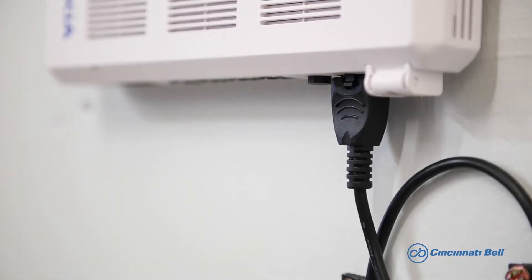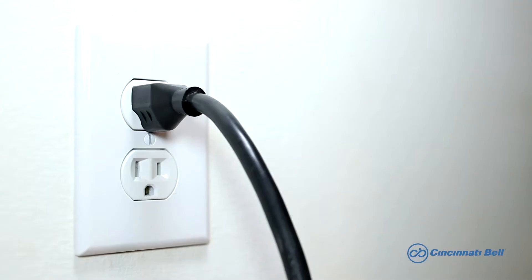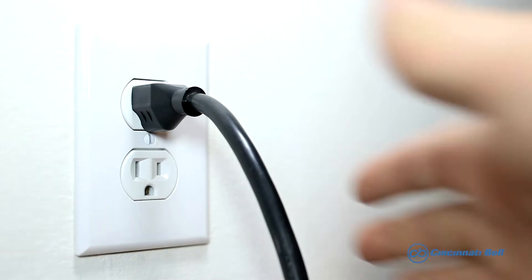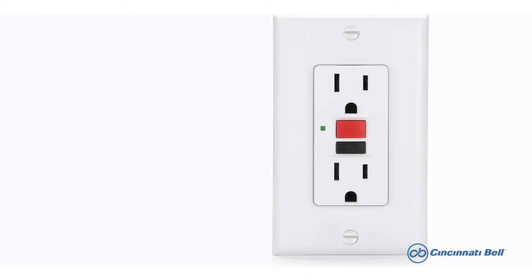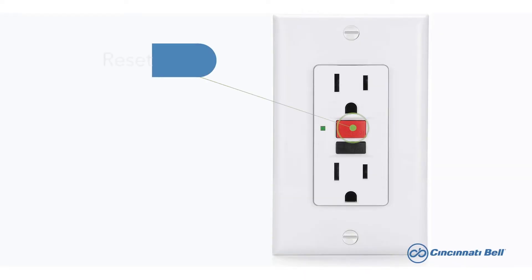Now that you've located your ONT, let's check and make sure there aren't any loose connections causing it to malfunction. Look for the main power cord that goes into the ONT and check it for a tight connection. If that appears to be secure, check your plug and make sure the end is tightly inserted into the outlet. If it's plugged into a GFI outlet, you may need to check and press the reset button.